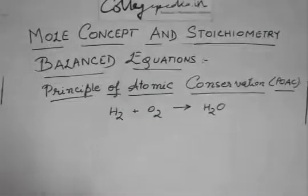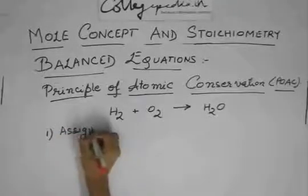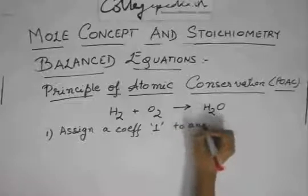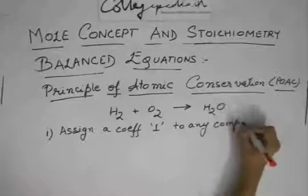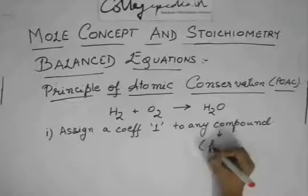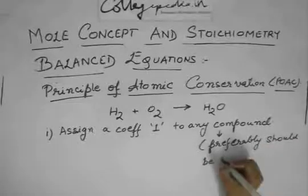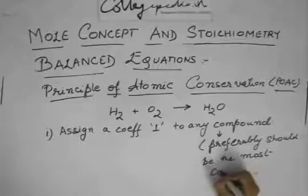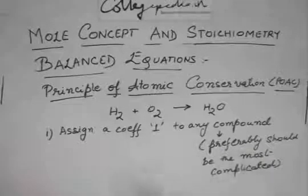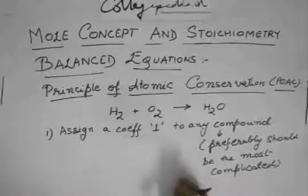Now, this principle in this method, what do you do? The first step is assign a coefficient 1 to any compound. Any, I mean, whatever reactant or product which is taking part in the reaction. And this compound, preferably, should be the most complicated.